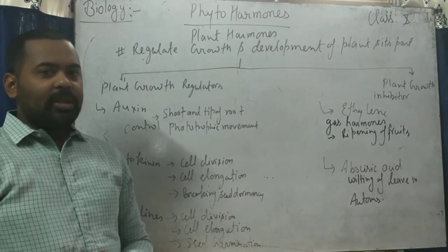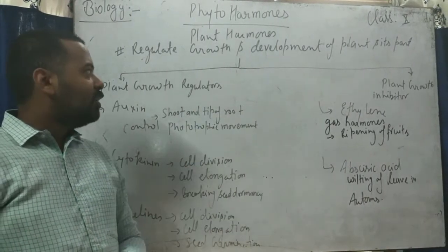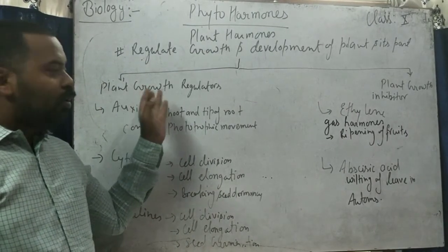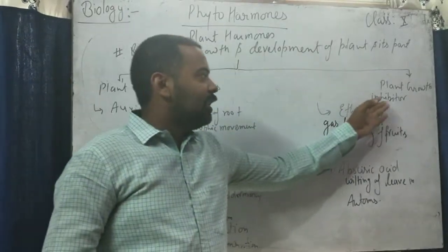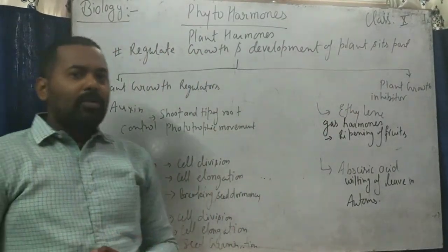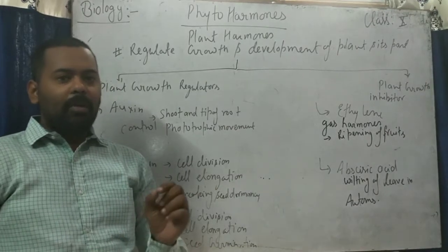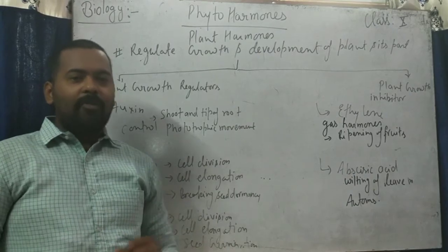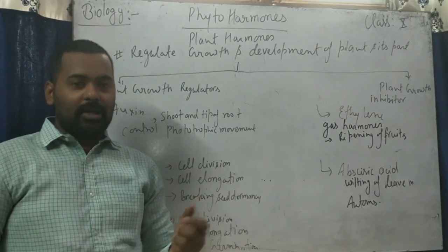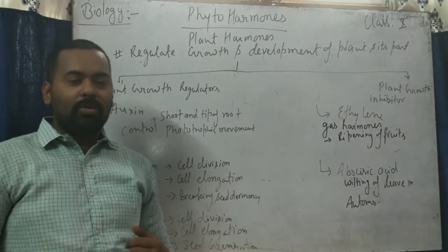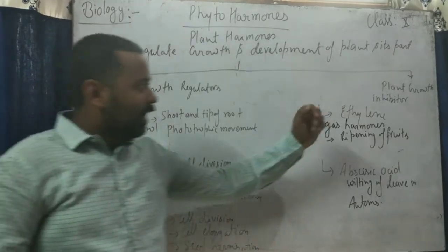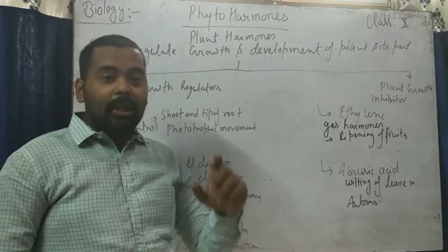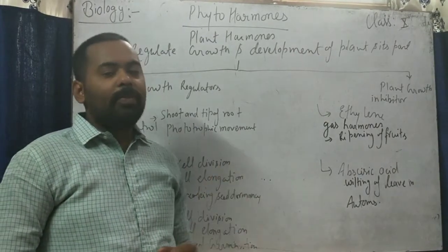According to their function, the phytohormones are of two types. Number one is the group of plant growth regulators and the second is plant growth inhibitors. Plant growth regulators are the group of plant hormones which regulate the growth of the plant. Plant growth inhibitors are the group of hormones which inhibit the growth of the plant.